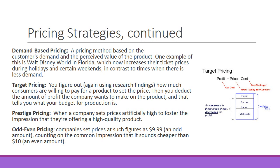Target pricing is when you figure out — using research findings — how much consumers are willing to pay for a product, then deduct the amount of profit the company wants to make. That tells you your budget for production. If you know a customer will pay $500 for a cell phone and you want to make at least $200 profit, then you have $300 to work with to create, manufacture, and produce that cell phone.